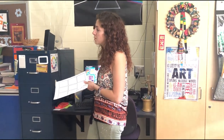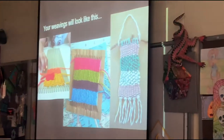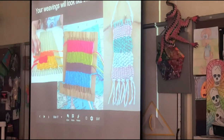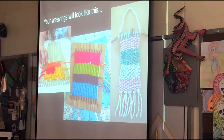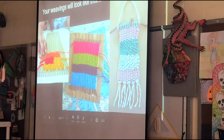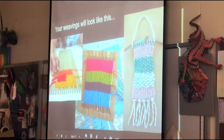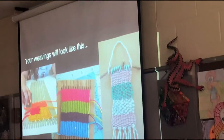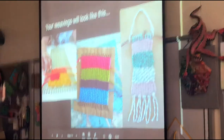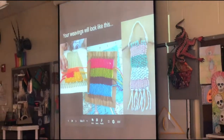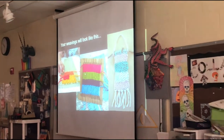People have even made little characters out of weaving, and bracelets too. Ours are going to look more like this — you can do whatever you want with it once you figure out how it works. Your weavings will look a little more simple since we're just starting out; maybe you'll incorporate a shape or two, but you'll definitely have some stripes of color. You'll have your warp strings going up and down, and then you'll weave your weft back and forth across the front.